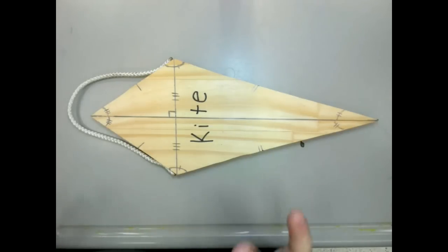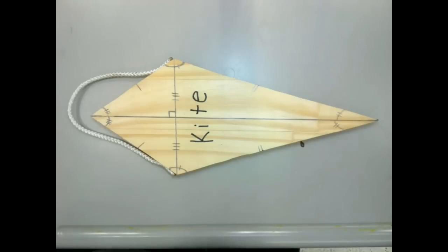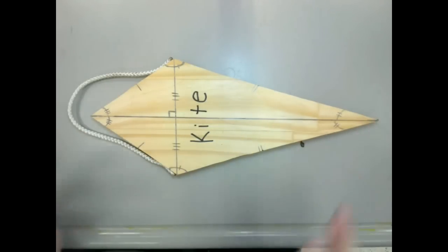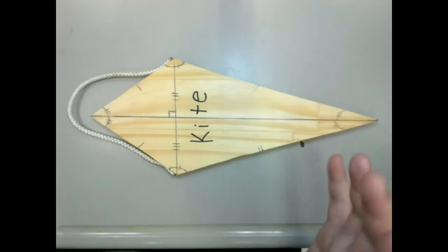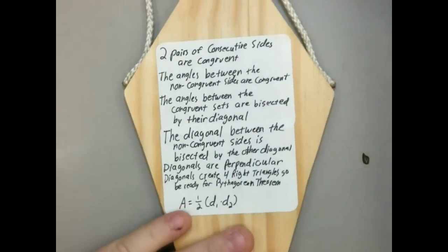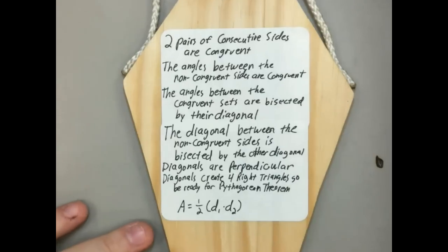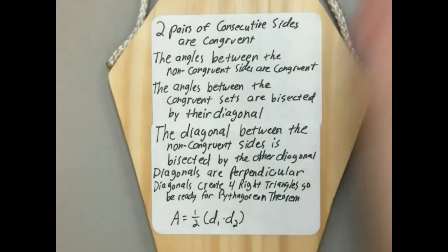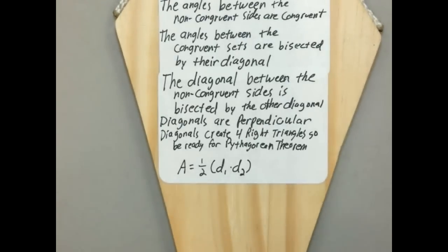Now let's break it down to the official statements you're probably going to want to utilize. Showing the four right triangles is probably the easiest way to remember all the parts of the kite that are congruent and the parts that are not, because this one is not as nicely formulated as a parallelogram. So just go over the list: you've got two pairs of consecutive sides that are congruent — that's these two sides and these two sides here that are consecutive.